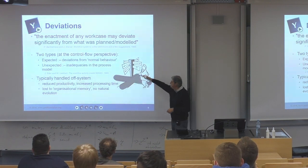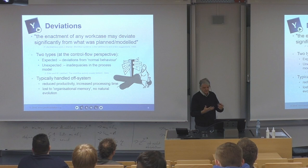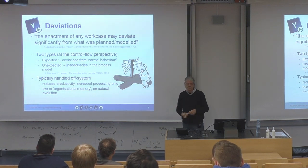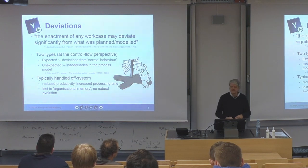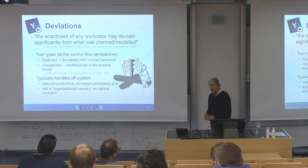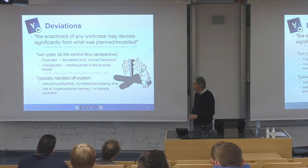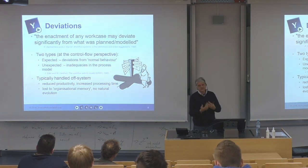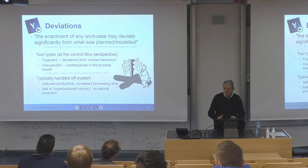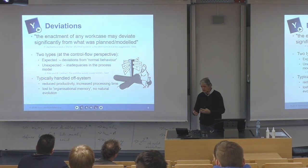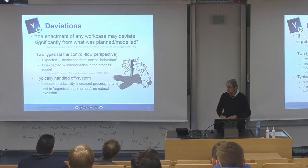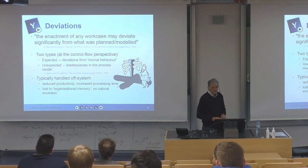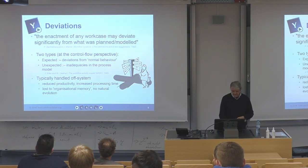Traditionally you would update the model to capture those things if they happen often enough; otherwise you would just deal with an exception when it occurred. Exceptions were typically dealt with off the system, which slows the whole process down, makes things manual, and loses the benefits of running a process in the first place. Also, the way in which the exception was resolved is lost to the organization because it's not recorded anywhere, so next time the same thing happens, someone has to think up a way of handling it again.